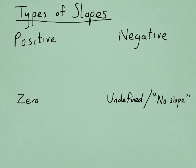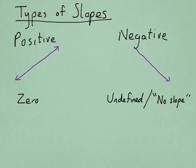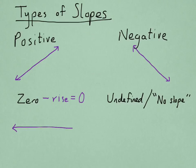Let me also remind you of the different types of slopes. A slope can be either positive, negative, zero, or undefined. A positive slope is when a line is increasing as we move from left to right — we always read a graph from left to right. A negative slope means the line is decreasing as we move from left to right. A zero slope means the rise is zero, because zero divided by anything is still zero, so a line of zero slope is horizontal.